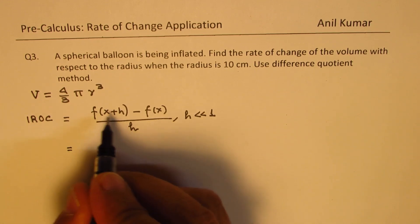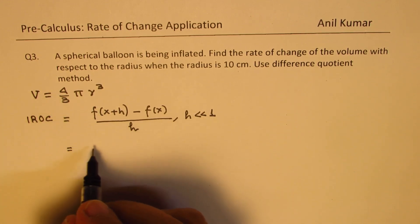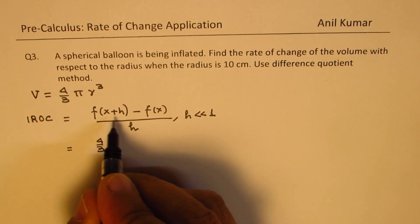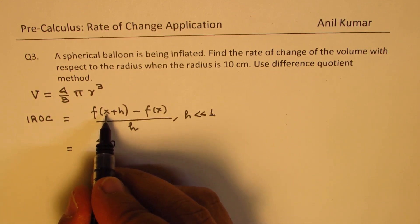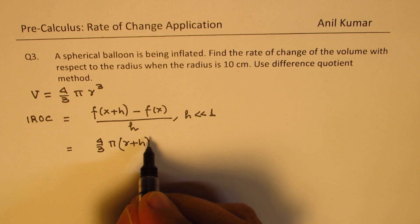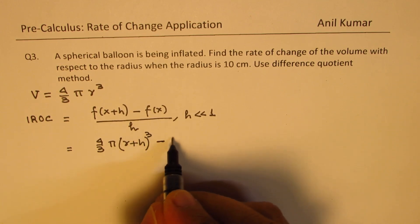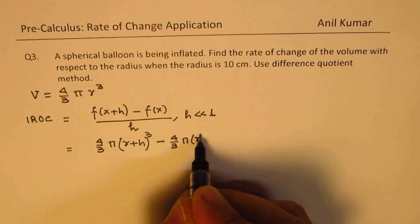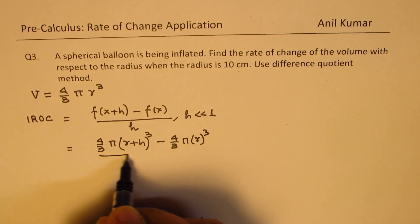We can write this as the function as 4 by 3 pi. Radius in this case is the variable. So we can write this as r plus h whole cube minus 4 by 3 pi r cubed over h.